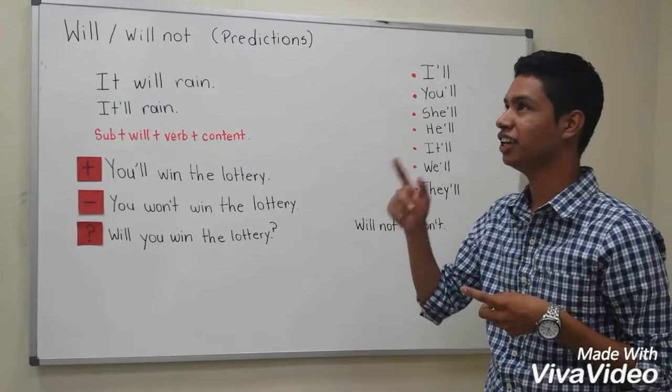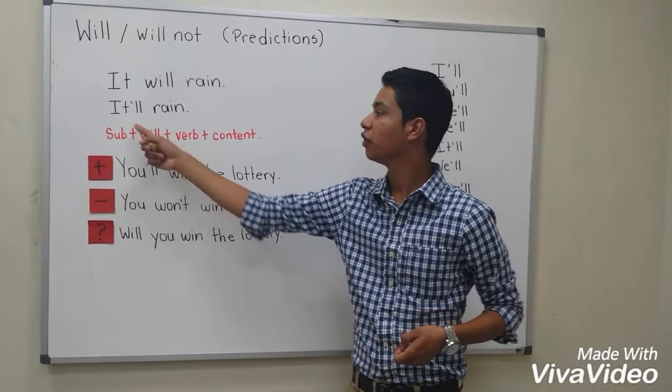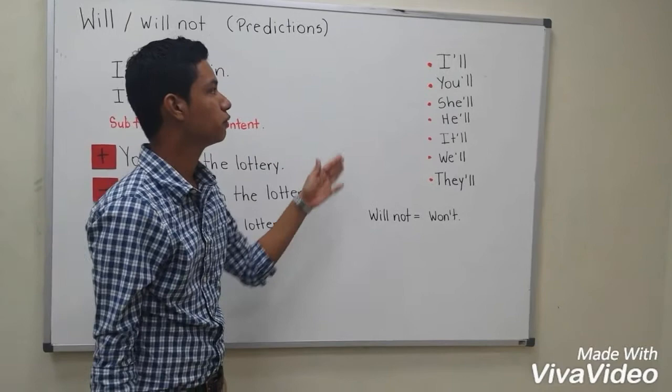It will rain. I think it will rain. Here we have an example of future prediction. It will rain. I think it will rain. And we can also say it'll rain, using a contraction. Here we have the contraction it'll.